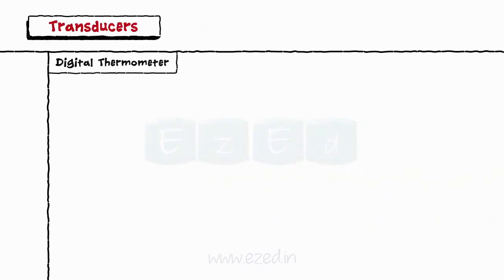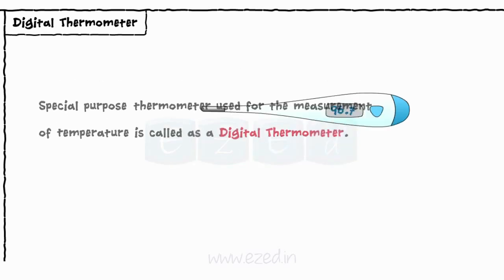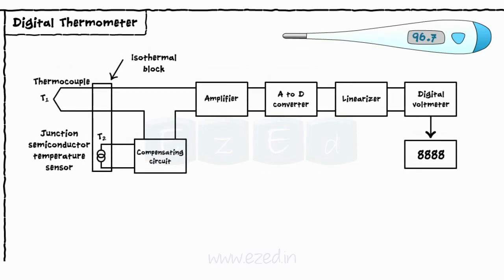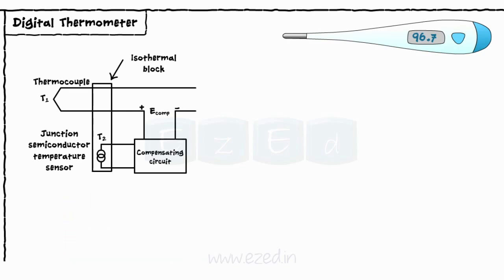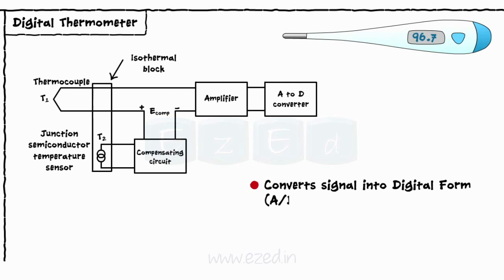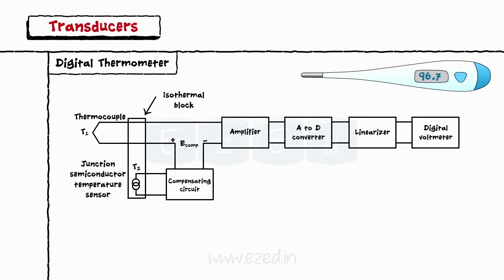The last thing we will study is a digital thermometer. A special purpose thermometer used for the measurement of temperature is called a digital thermometer. The block diagram of a digital thermometer using a thermocouple is as shown. As we are using a thermocouple, we have two measuring junctions T1 and T2. Wires from junction T1 are screwed directly to an isothermal block terminal strip. The temperature T2 of this block is measured by a sensor and applied to the compensating circuit. The compensating circuit produces a voltage proportional to temperature T1, which is in millivolts. It is applied to an amplifier which amplifies it to a desired level. This amplified voltage is passed to an A to D converter which converts it into digital form. This digital voltage is then linearized by a linearizer and applied to a digital voltmeter which gives the direct digital display of temperature T1.